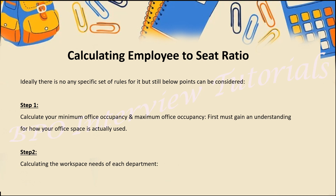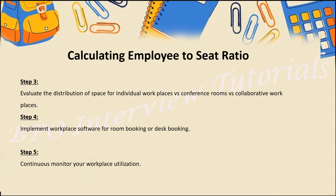Check if there is any waste of space. Step two: calculate the workspace need for each department. After step one, you will know where space is unoccupied or available. Check all workflows and how many employees are in each one; do the sum and check how many seats you require. Step three: evaluate the distribution of space for individual workplaces, conference rooms, and collaborative work areas — it totally depends on how you want to utilize your workspace.